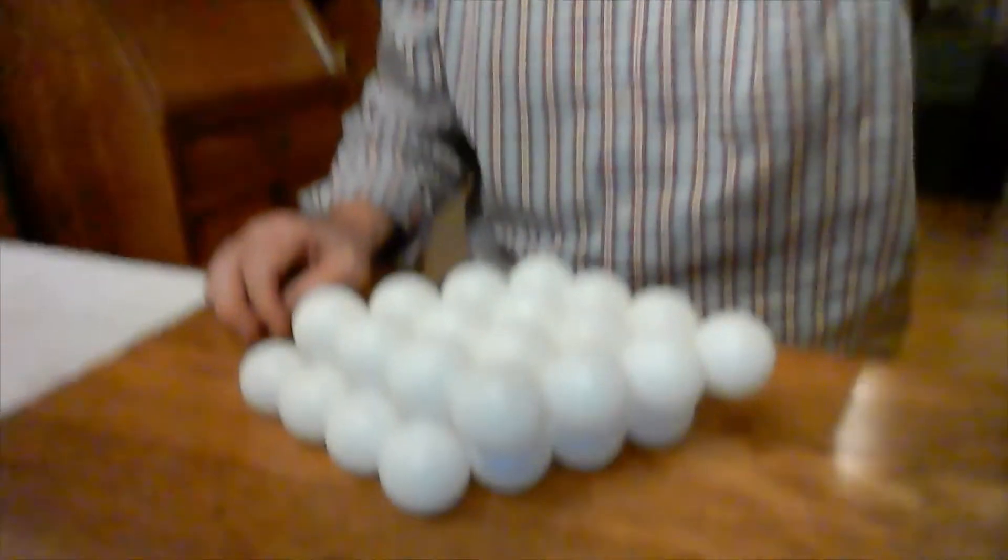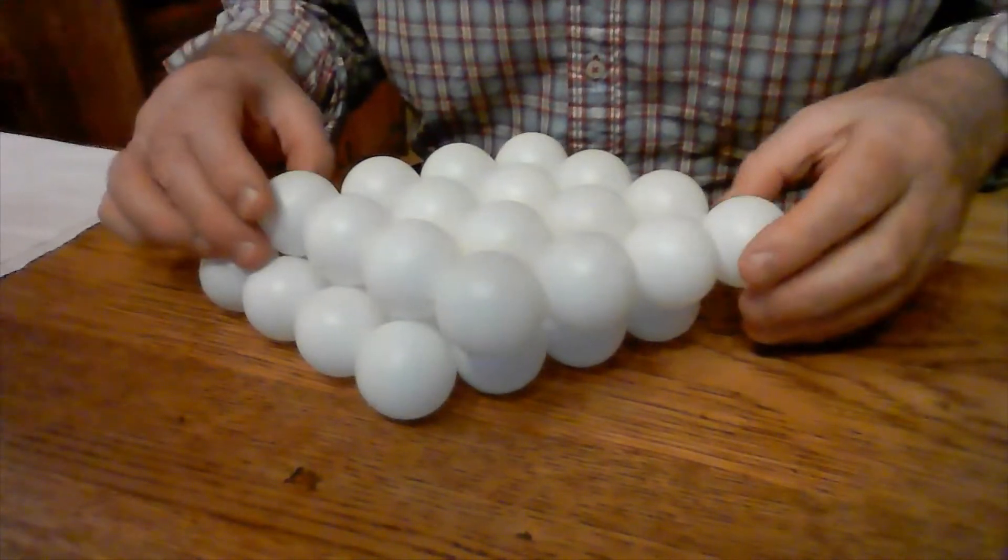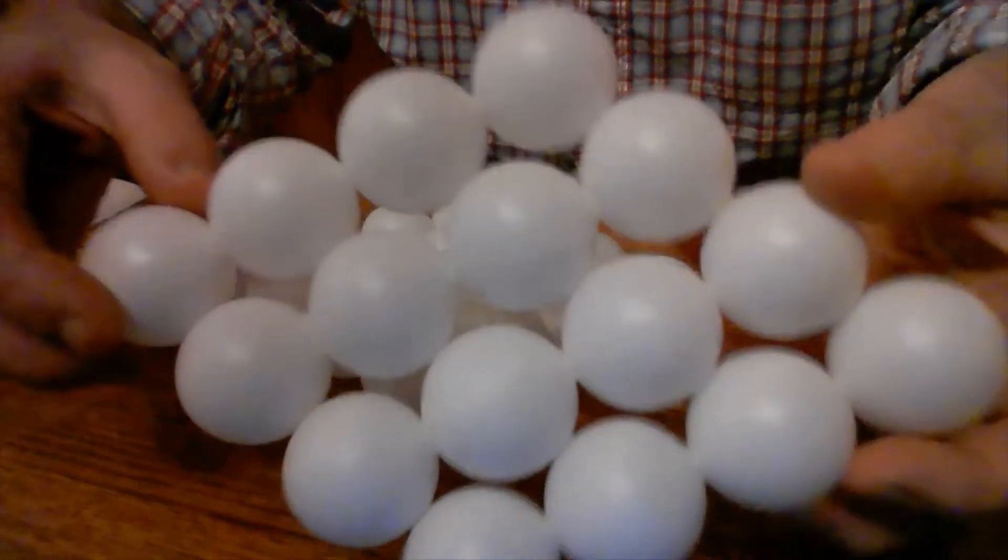We're talking about slip and also twinning, possible twinning in BCC. So here's the slip plane for BCC, and in FCC you can see these gaps here.